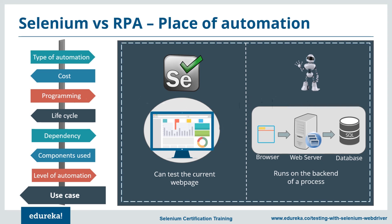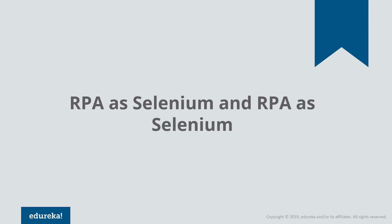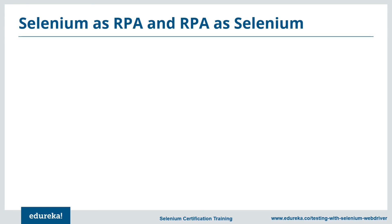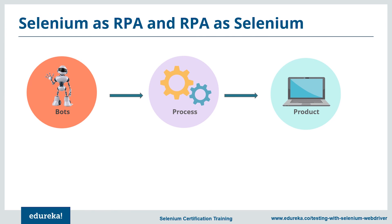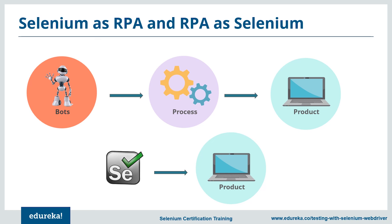A commonly asked question: what if I try to use RPA as a testing tool? Both Selenium and RPA help deliver automation solutions. RPA can technically be used to test web applications, but it is not recommended. RPA is not directly applied to the product — it is applied to processes associated with the business environment. Selenium depends on the product for testing. Conversely, Selenium cannot be used as RPA because it does not automate business processes.